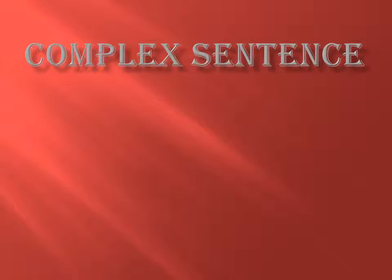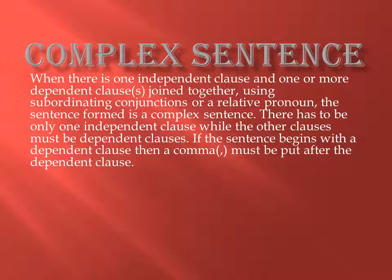Now the third one is the complex sentence. When there is one independent clause and one or more dependent clauses joined together using subordinating conjunctions or a relative pronoun, the sentence forms a complex sentence. There has to be only one independent clause, while the other clauses must be dependent clauses. If the sentence begins with a dependent clause, then a comma must be put after the dependent clause.